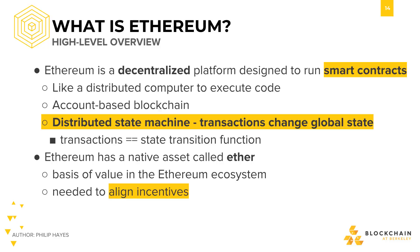On their website, it says that Ethereum is a decentralized platform designed to run smart contracts. In short, it's a distributed computer spread amongst a multitude of nodes across the world that executes the code that people feed to it. And because of this architecture, it can run unstoppable applications. Applications are run exactly as programmed, without any possibility of downtime, censorship, fraud, or third-party intervention.